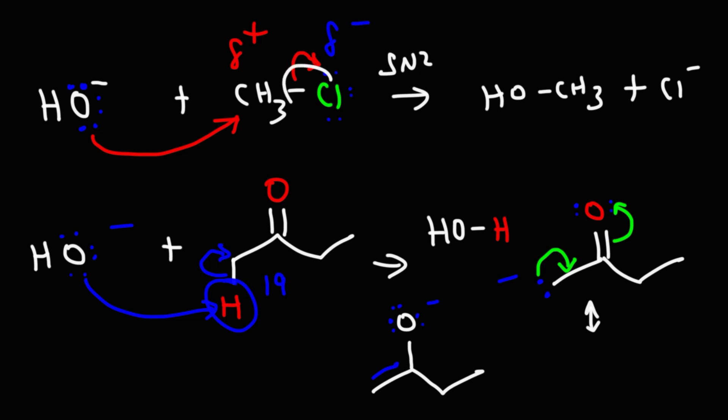In the C-H bond example, the bond breaks and the electrons go towards the carbon, leaving a negative charge. In the C-Cl bond example, the electrons go toward the more electronegative chlorine atom. Remember: whenever you have a heterolytic bond cleavage, the electrons go toward the atom that is more electronegative. If the two atoms are identical and the bond breaks, it's typically a homolytic bond cleavage where each atom gets one electron from the two electrons in that bond.